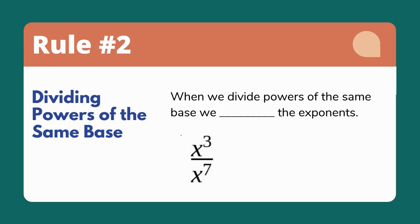Rule number two, when we divide powers of the same base, we subtract the exponents. That means x to the third divided by x to the second becomes x to the negative fourth.